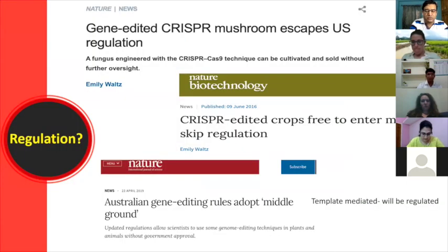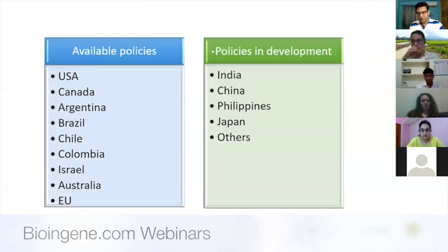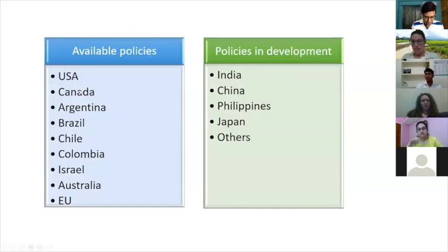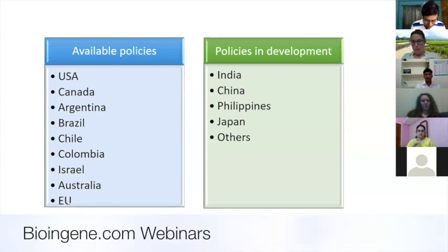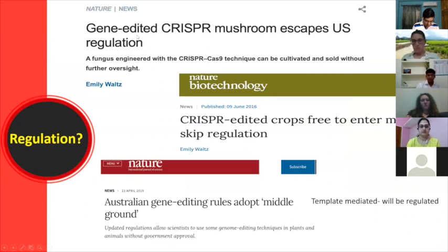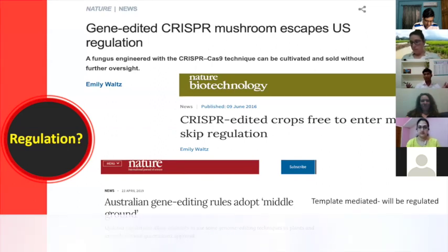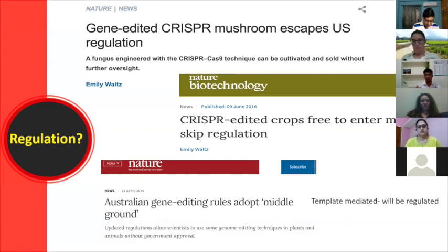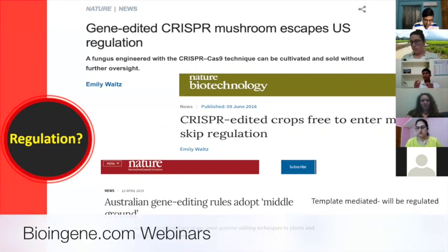Looking at the overall scenario, all countries have a very positive stance toward deregulating genome-edited crops from SDN1 and SDN2, except the European Union. India has already drafted a regulatory proposal and received public comments, and is in the process of developing regulatory rules for genome-edited crops. For example, a gene-edited CRISPR mushroom escaped US regulation because it does not contain any foreign insertion — only a few base pair changes in the PPO gene.